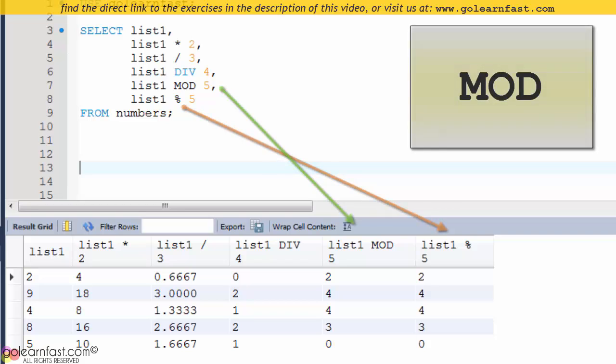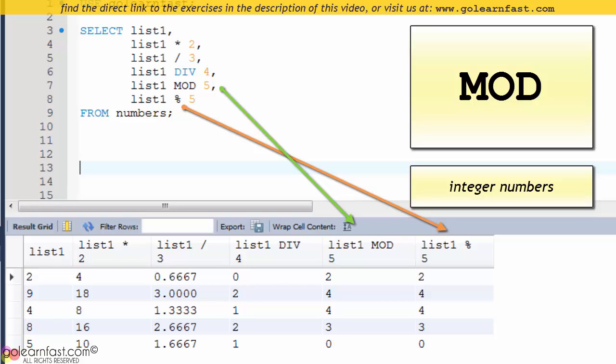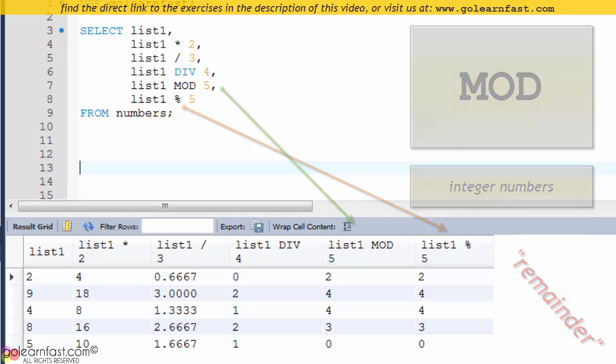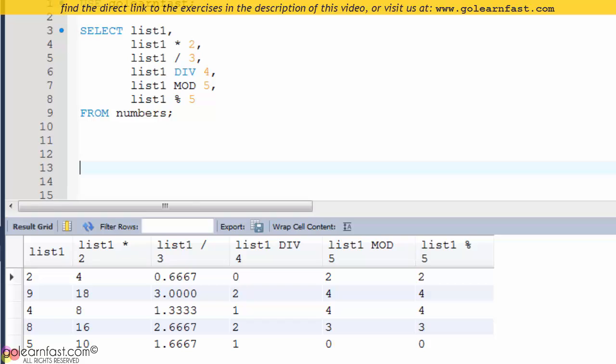The modulo operator only works with integer numbers. The reason for that is because the mathematical notion of remainder is only applicable to integer division.